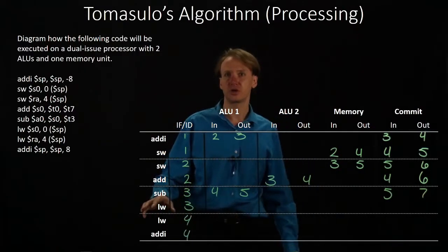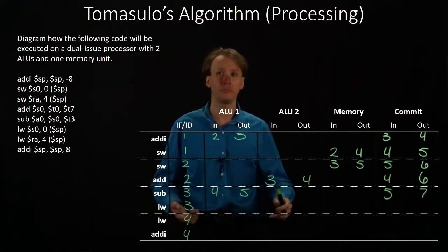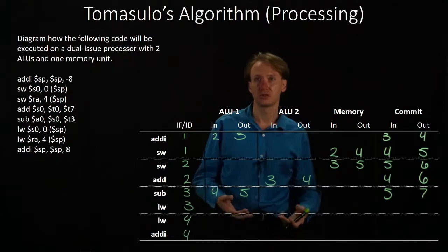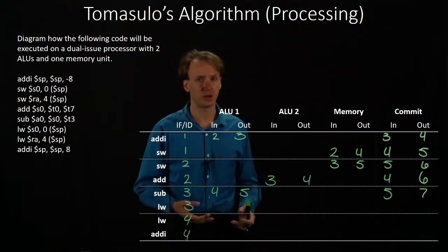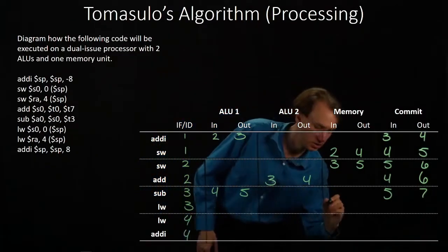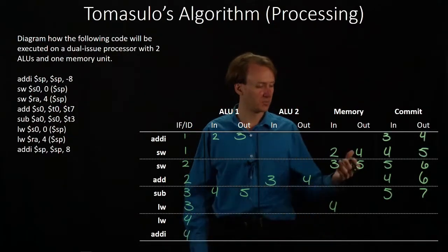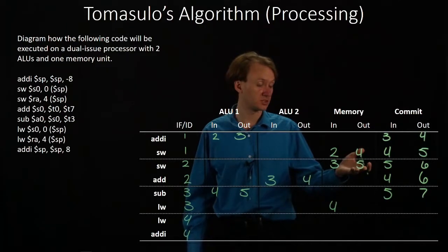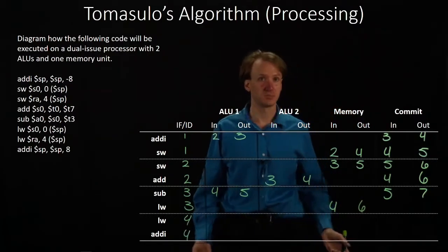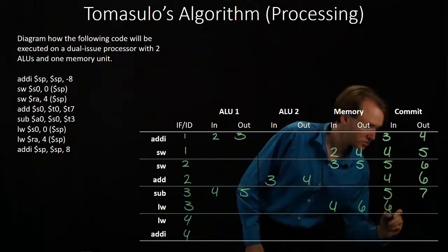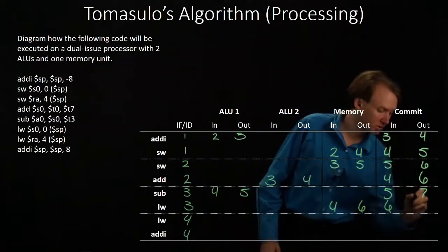Next we have the load word instruction. It is dependent on S0, which we just calculated, and also on the stack pointer, which was updated earlier — both should be available. So we'll send this off to the load store unit. It has all of its parameters available, but the memory unit is still in use until cycle six, so the load word instruction gets to run in cycle six. Results will then be committed, and since we have a slot open in cycle seven, we can commit those results immediately.